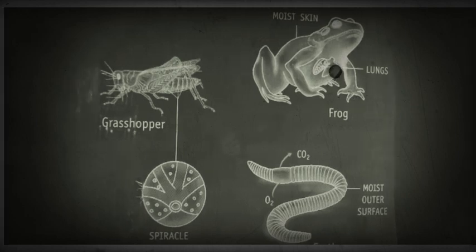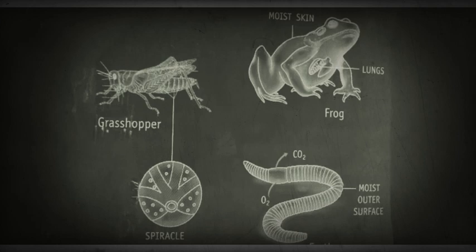Frogs have lungs, they can also breathe through their moist skin. Frogs have lungs and moist skin - these three organs: lungs, moist skin, and through gills. But the gills are destroyed after the adult converts. Earthworms also do gaseous exchange through moist skin.